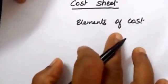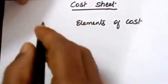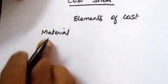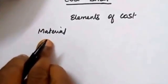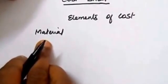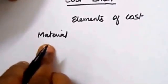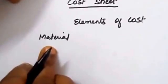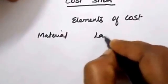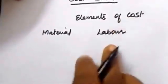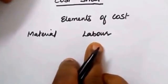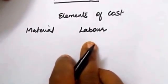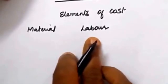Cost can be classified into three categories. First one, material. Material cost is incurred at the time of acquiring the raw material from the supplier — that cost is called material cost, and it is a major portion of cost. Second one, labor cost — the wages paid to laborers who are directly involving in the production process.